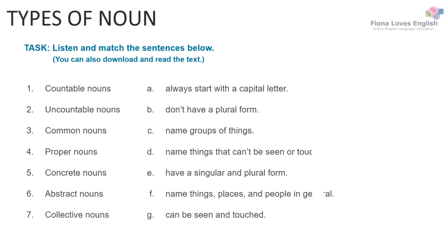Countable nouns have a singular and plural form. English nouns are also categorised according to meaning. Proper nouns are the names of people, places and some things, and they always use capital letters.